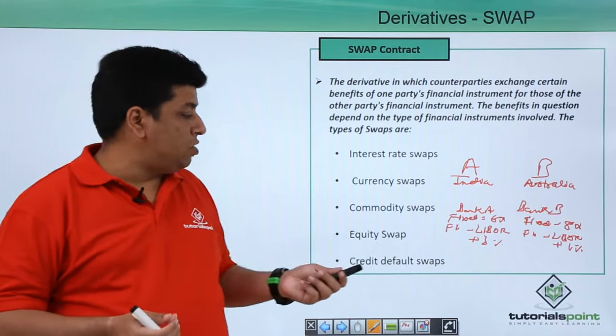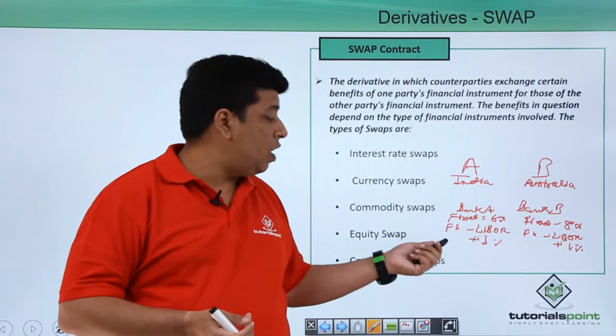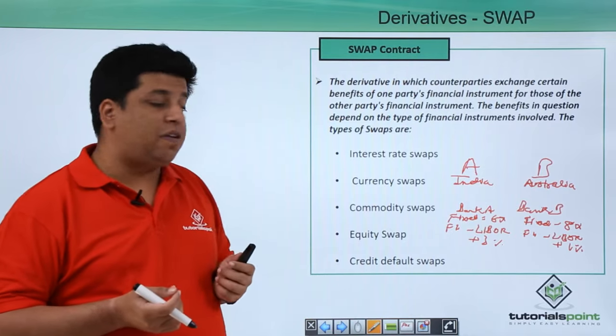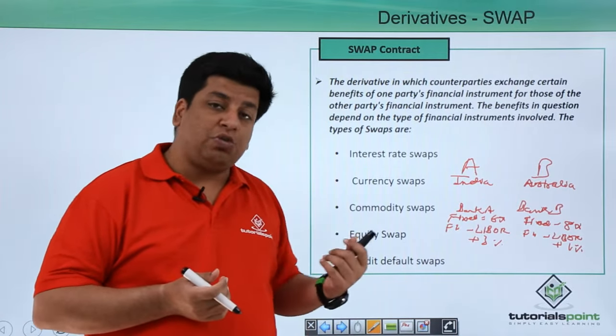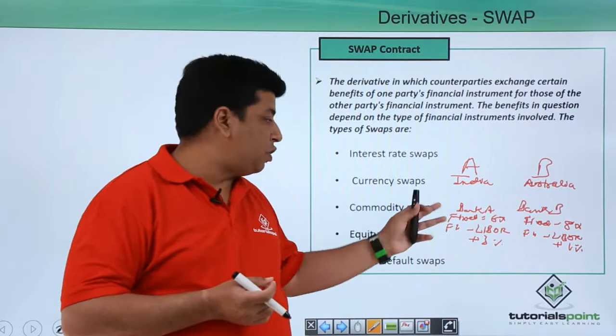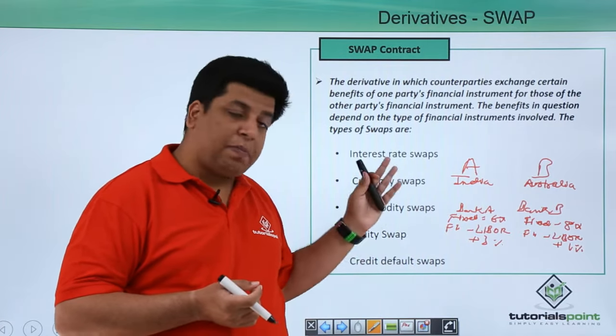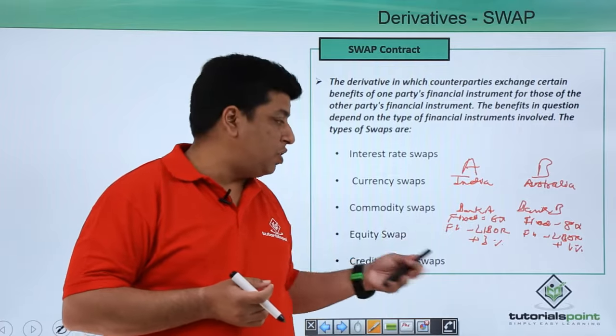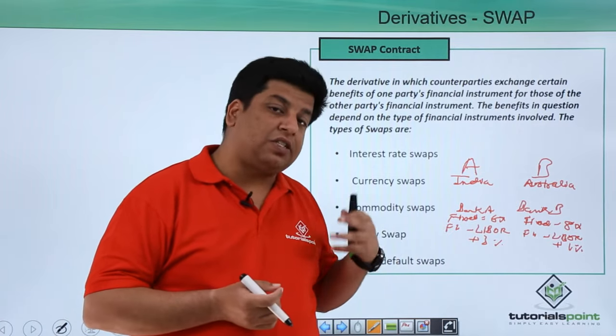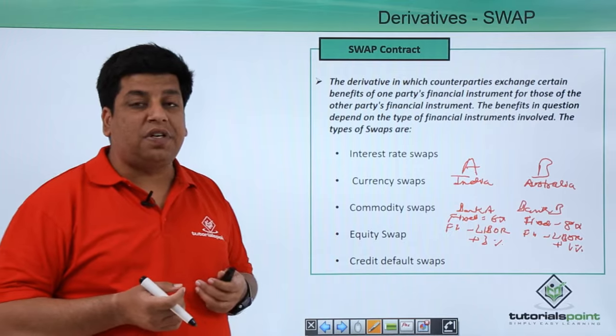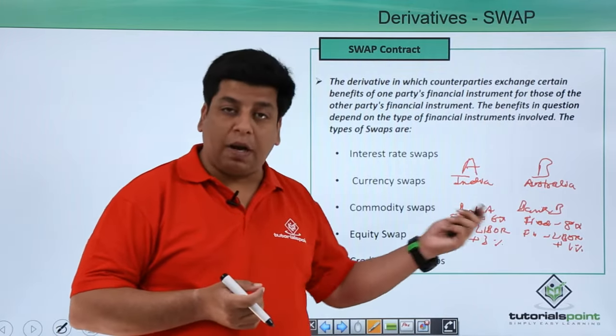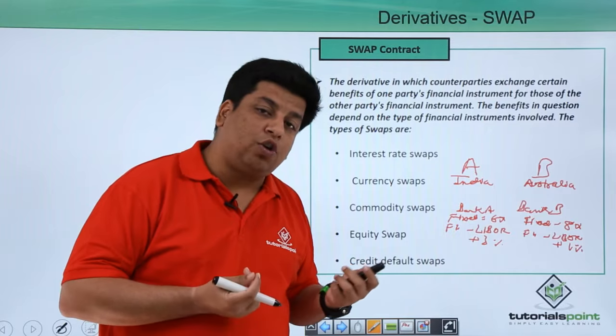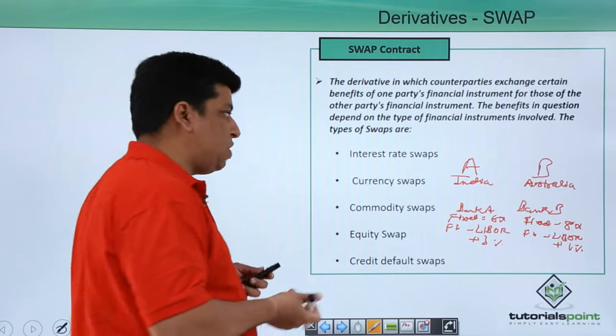Company A wants the loan at a fixed rate and company B wants the loan at a fixed rate, but due to the circumstances for company A in India, floating loan is costlier than fixed, and it is vice versa for company B in Australia. They approach a bank called swap bank, let's say HSBC.